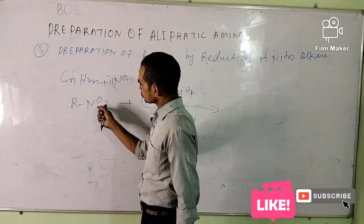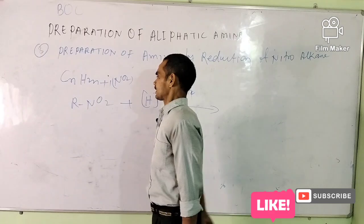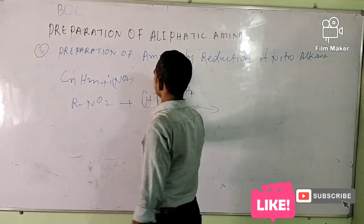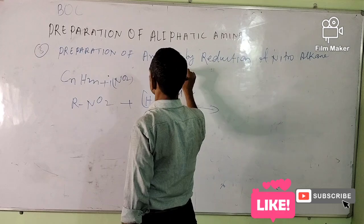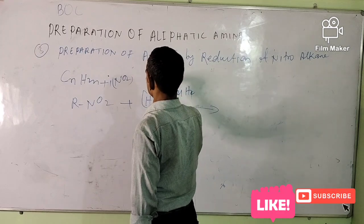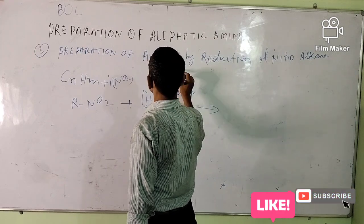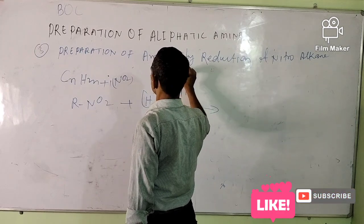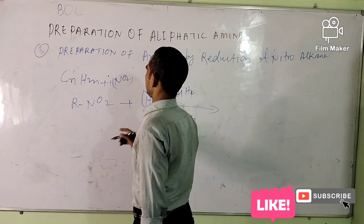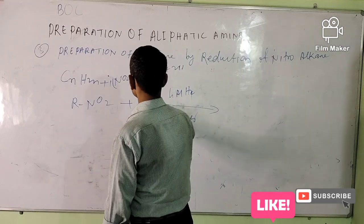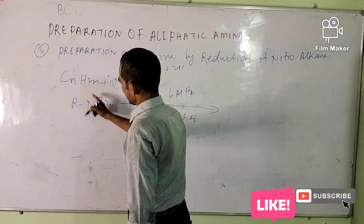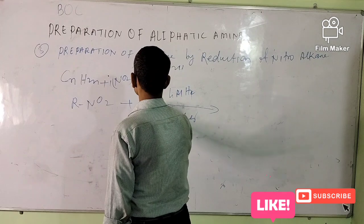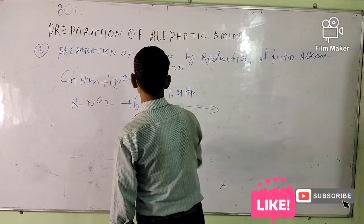Is oxygen ko remove karna hai. Yeh 2 oxygen hain, toh 2 oxygen ke liye kitno hydrogen chahiye? Ek oxygen ke liye 2 hydrogen chahiye, toh 2 oxygen ke liye 4 hydrogen chahiye. Aur is nitrogen par 2 hydrogen chahiye. Yani hum 6 hydrogen le liye.